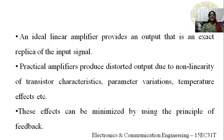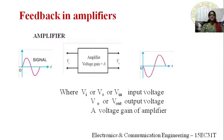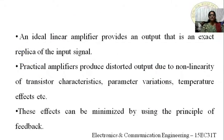Distortion in practical amplifiers is due to non-linearity of transistor characteristics, parameter variations — such as current gain beta, input base voltage VBE, supply voltage — and temperature effects. Because of these, the output of the practical amplifier is not an exact replica of the input signal. To minimize these effects and get the exact replica, we use the feedback principle.